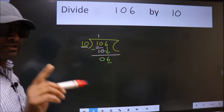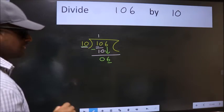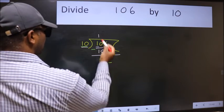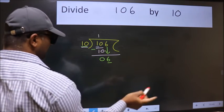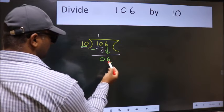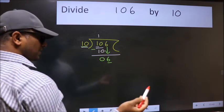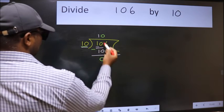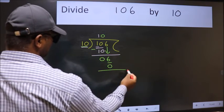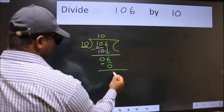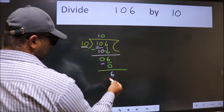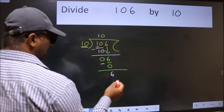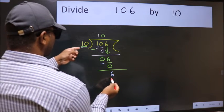Instead of that, what we should think of doing is, which number should we take here? If I take 1, we will get 10. But 10 is larger than 6. So what we do is, we take 0. So 10 into 0, 0. Now we subtract, we get 6. Over here, we did not bring any number down. And 6 is smaller than 10.